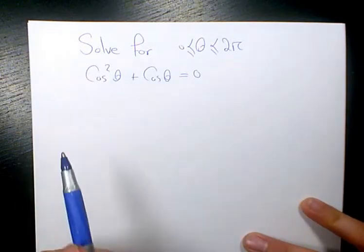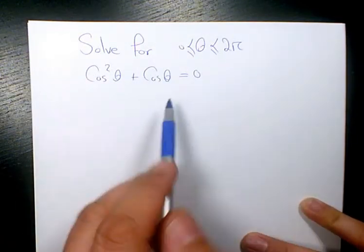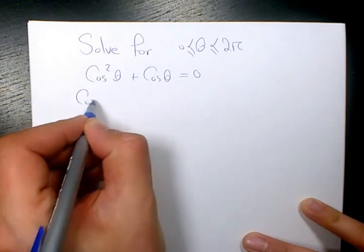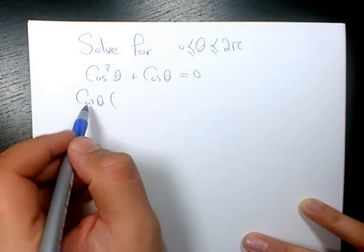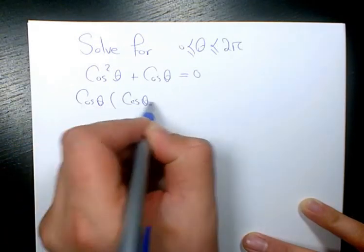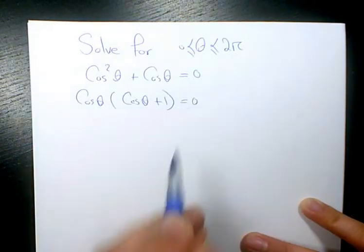First, to solve this quadratic equation, I'm going to use the factoring method, which is going to be easier for this one. So when you factor out cosine theta, it's going to be cosine theta times cosine theta plus 1 equals 0.